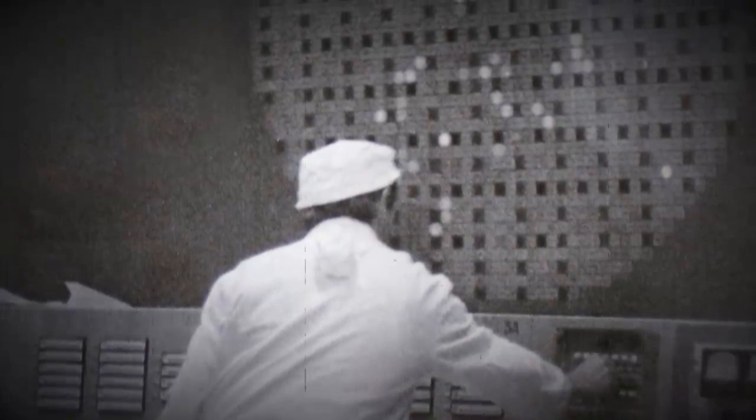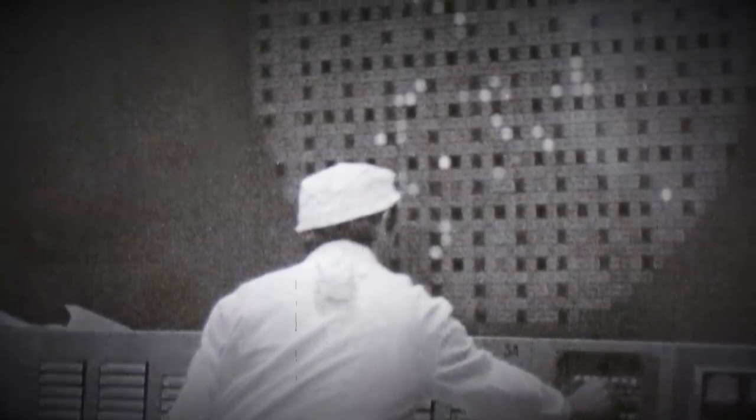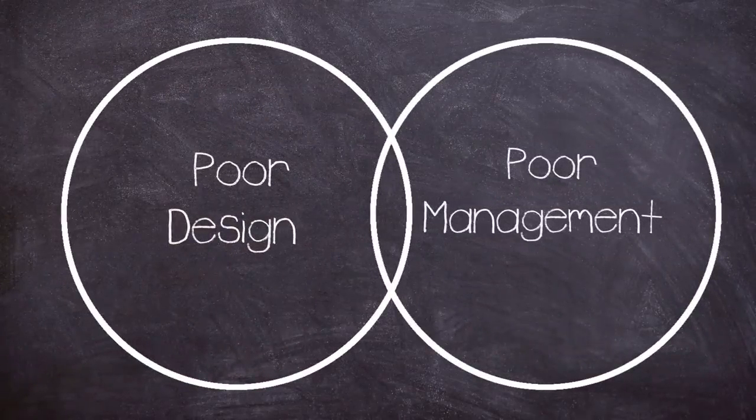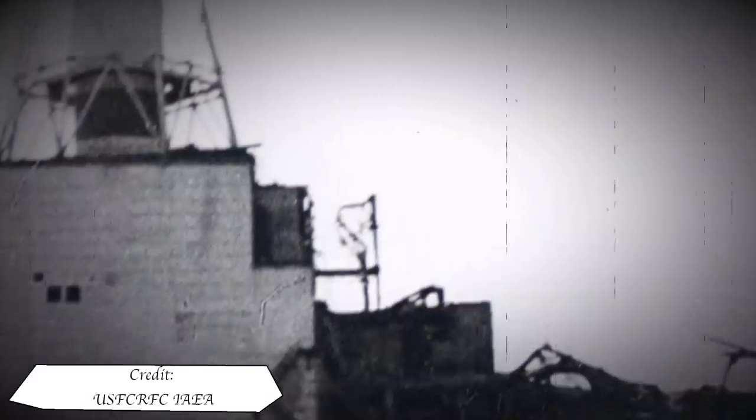The disaster became a testament on how poor design and mismanagement when placed on the Venn diagram can equal irradiating most of eastern Europe. Of course today we are looking at the Chernobyl disaster of 1986 and this one has earned the magical 10 on my patented plain difficult disaster scale.